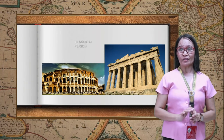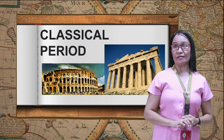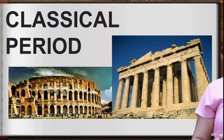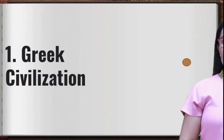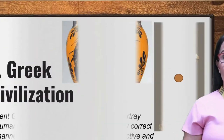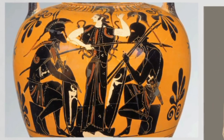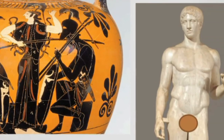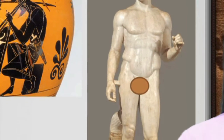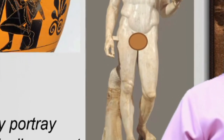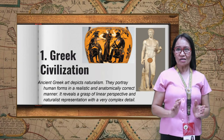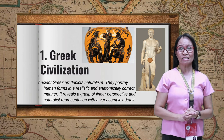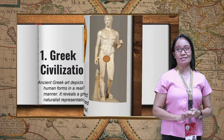After the ancient period, we move to the classical period. Under the classical period is the Greek civilization. Ancient Greeks depicted naturalism — they portrayed human forms in a realistic, anatomically correct manner. Artists studied anatomy, physics, and optics. Greek art reveals a grasp of linear perspective and naturalistic representation with very complex detail.